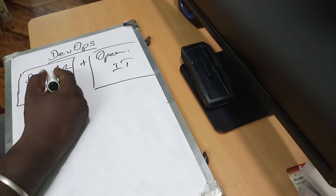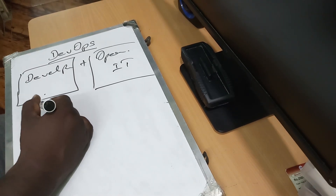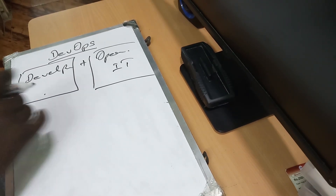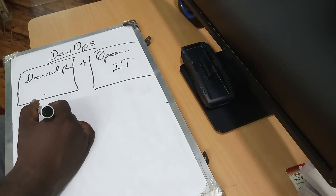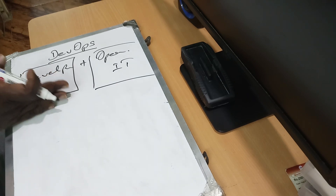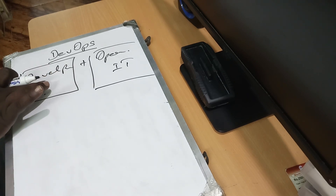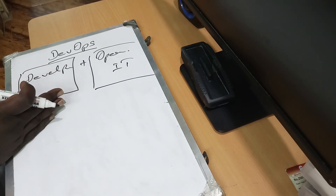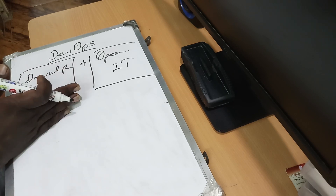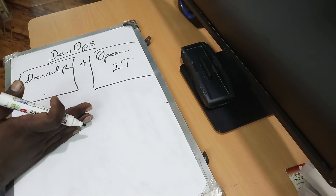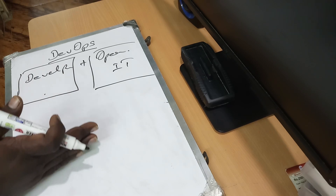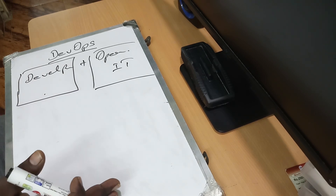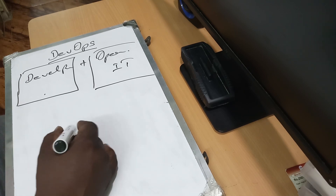The development code is saved in a source repository. If we have any work, we have development code. If we have testing, we fix the testing code. We will have QA. That is the development process.